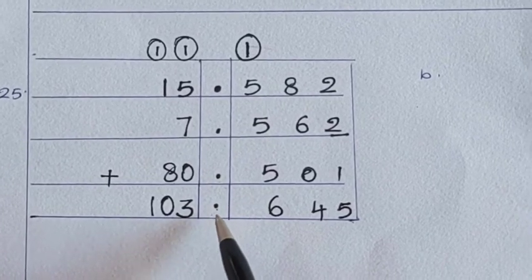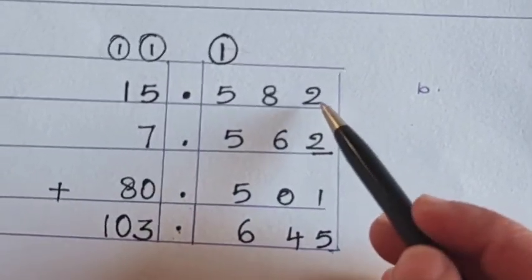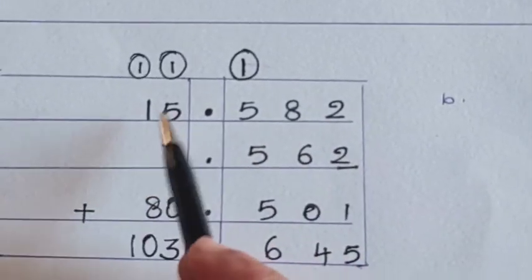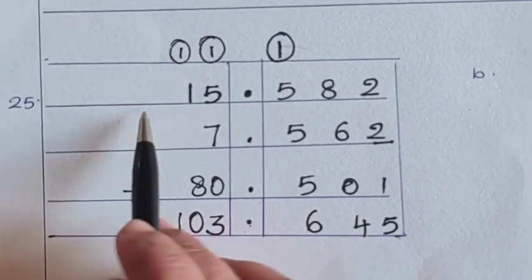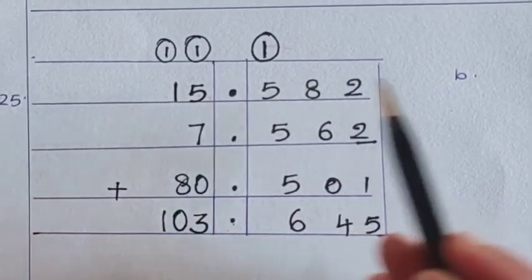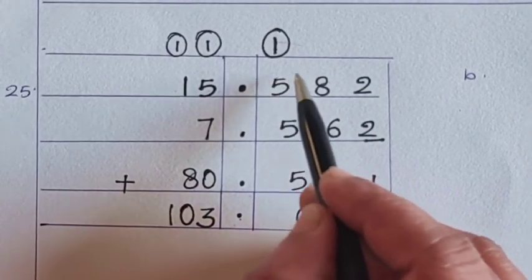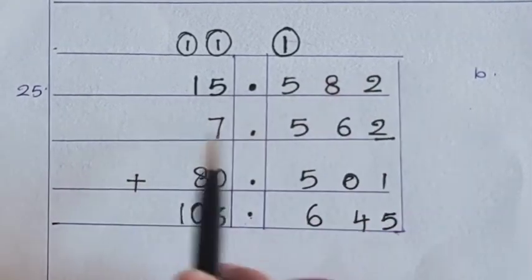Like whole numbers, we can add. The main thing is, according to the place values, you have to arrange. This is the whole number part and this is the decimal part. One sentence. And here, this is 10th place, 100th place and 1000th place. This is the place value of decimals. Add it first.